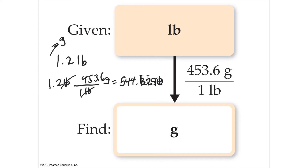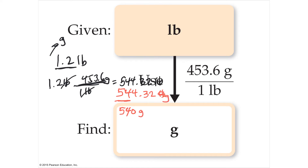Now you have to apply significant digits. You were given two significant digits in 1.2, and four in 453.6; the calculator gave five digits. So round to two significant digits. 544.32 rounds to 540 grams — you need the zero because the actual value is 544, not 54. So the answer is 540 grams. That trailing zero is insignificant, giving two significant digits.